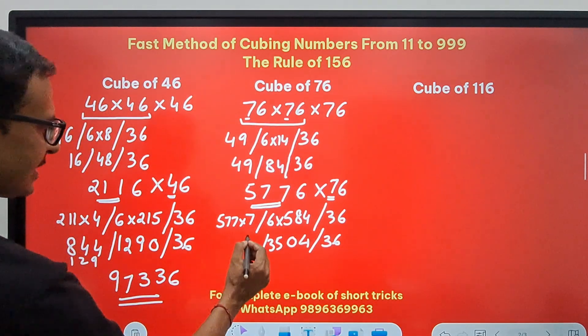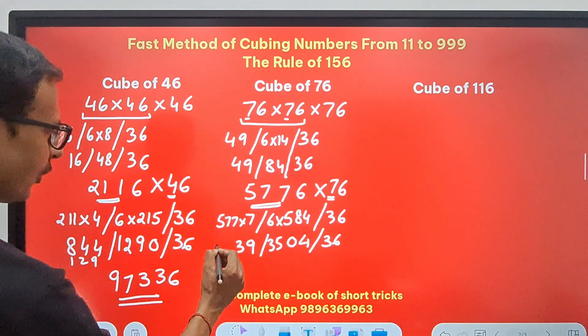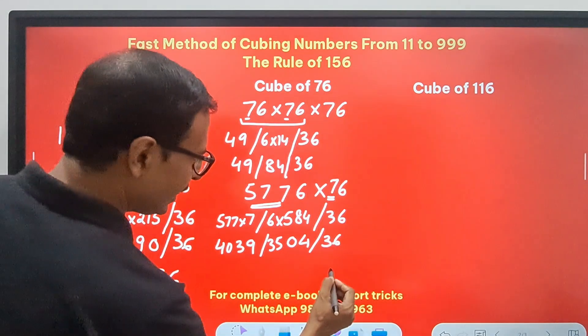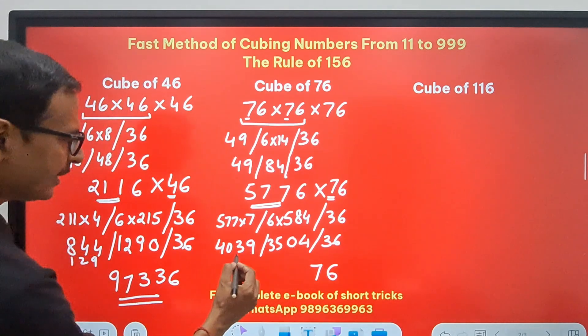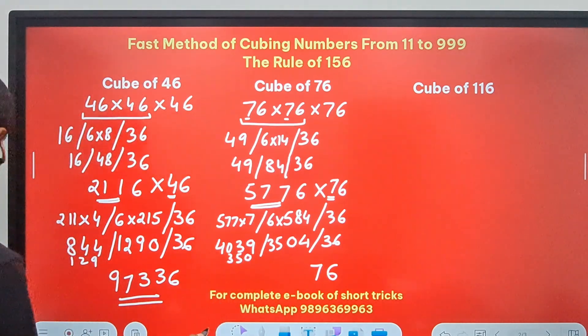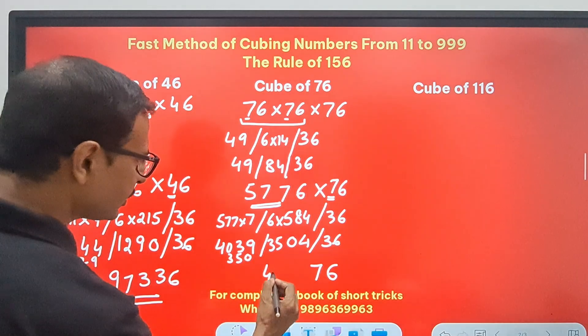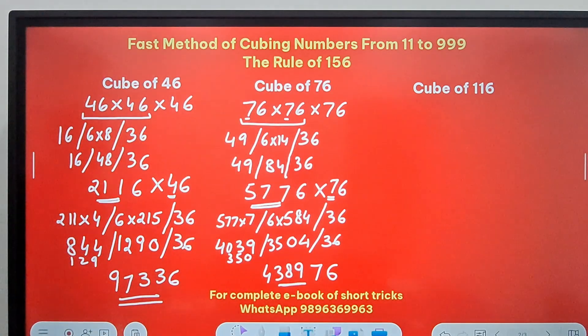Likewise, 7 sevens are 49, 9, 4 carry, 53, 3, 5 carry. So 40, 4, 0, 3, 9. And then start retaining 6, 3 goes here, so this becomes 7. And the 350 gets carried forward here which gives you 4, 3, 8, 9. So 4, 3, 8, 9, 7, 6 is the cube of 76.